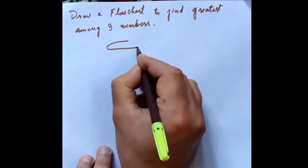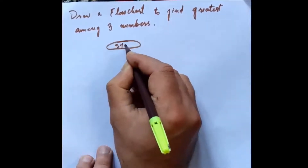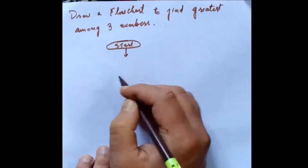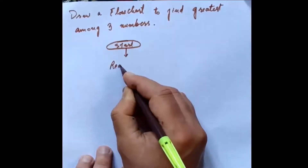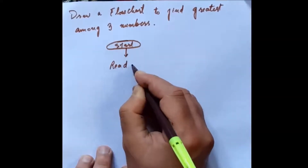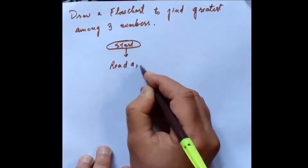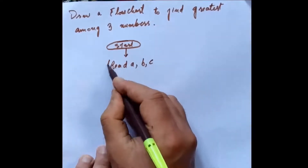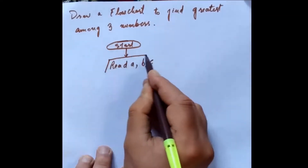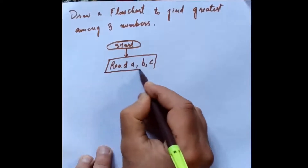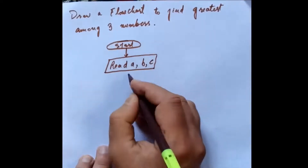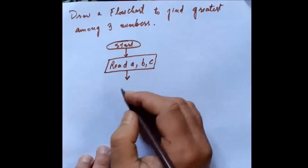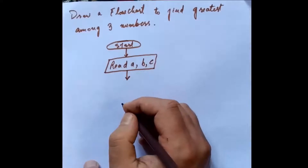First of all, we will make a Start symbol. Then we have to read three numbers — Read A, B, C. I have made a read statement here and read three numbers.